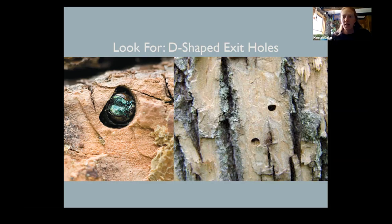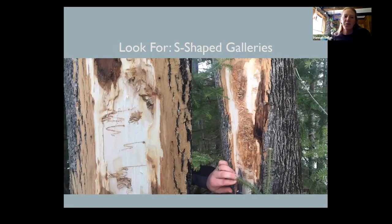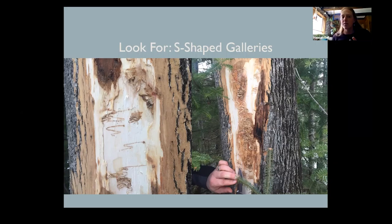The larva, once it matures and becomes a beetle, bores out from the cambium layer through the bark — that's when we see these exit holes. Another sign is if we peel back the bark when we're seeing some of the symptoms — emerald ash borer has these really distinctive S-shaped galleries. The larger the infestation, the tighter they are together. Even with just a few, they're very S-shaped. They don't go up and down, and they don't meander around or go in circles or cross their paths, like a lot of our native pathogens do.